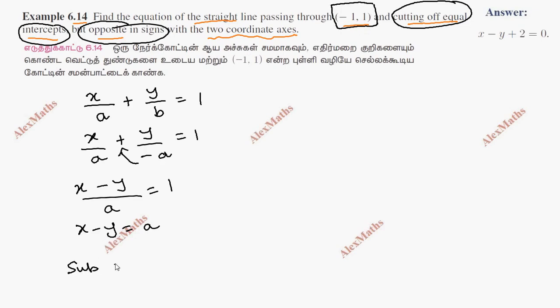Substitute (-1, 1). If we substitute, x minus y equals -1 minus 1, which equals -2. Then the a value is -2.